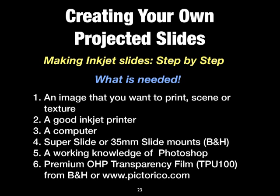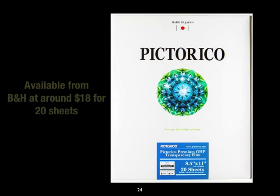What do we need? First, an image — a scene or a texture. Second, a good inkjet printer. Third, a computer. Fourth, super slide or 35mm slide mounts — you can purchase those from B&H Photo Video in New York at bnhphotovideo.com. You also need a working knowledge of Photoshop, and a special transparency film called Premium OHP Transparency Film TPU100, which you can purchase from B&H or from pictorico.com.